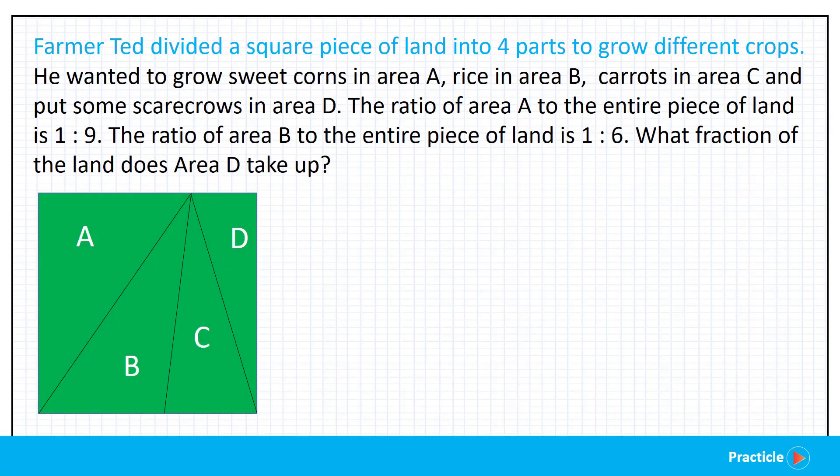Farmer Ted divided a square piece of land into four parts to grow different crops. He wanted to grow sweet corns in area A, rice in area B, carrots in area C and put some scarecrows in area D. Wow, that sounds really exciting right?